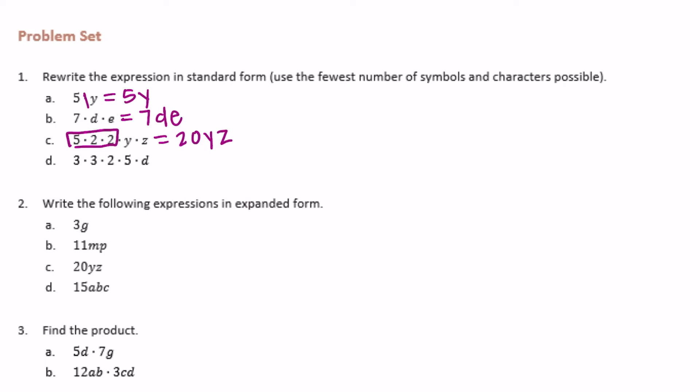D: 3 times 3 times 2 times 5 times d. 3 times 3 is 9, 9 times 2 is 18, and 18 times 5, let's do that really fast. 5 times 8 is 40, carry the 4. 5 times 1 is 5, plus 4 is 9, so we have 90d.